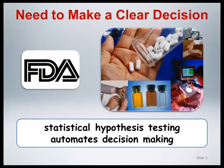Statistical hypothesis testing is a formal inferential method that automates decision-making by essentially converting a p-value into a dichotomous conclusion that the result is either statistically significant or not statistically significant. Although the hypothesis testing approach is probably best suited for situations like FDA-regulated drug trials, its use has been ubiquitous in peer-reviewed journals across many scientific disciplines.